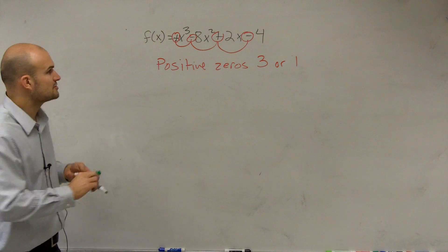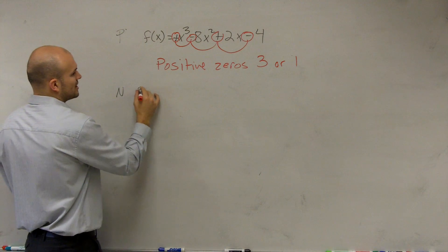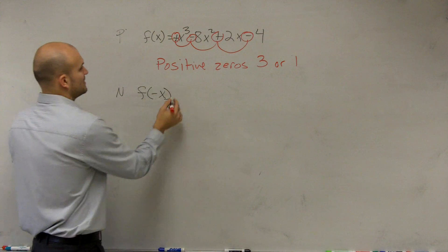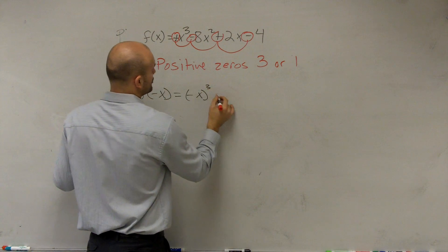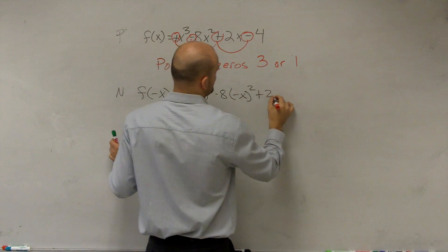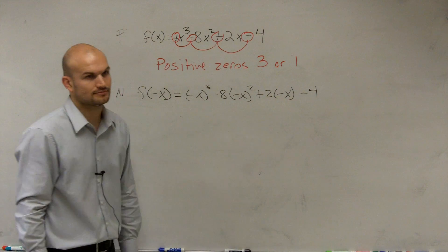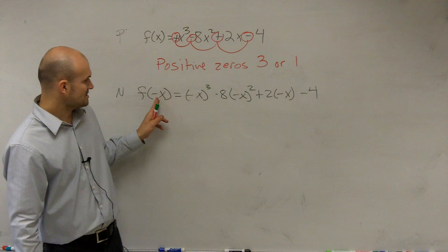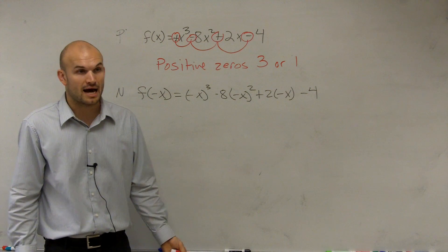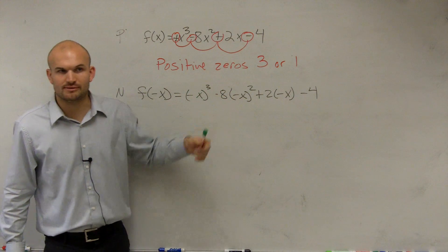So now let's go and look at the negative. So this is for positive. So for the negative, instead of doing f of x, ladies and gentlemen, we need to do f of negative x. So we need to do (-x)³ - 8(-x)² + 2(-x) - 4. All I did was I plugged in negative x in for all of my x's. Now I need to simplify.